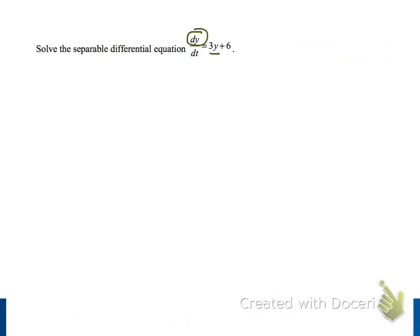So our first step to solving this equation is factoring out the 3 on the right side, and so we get 3 times the quantity y plus 2. Next, we divide both sides by y plus 2, and so on the right side we're left with just 3.